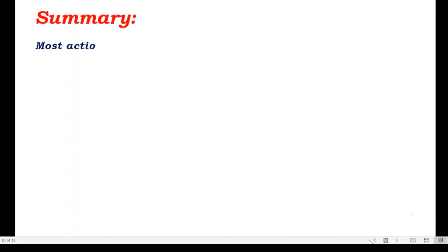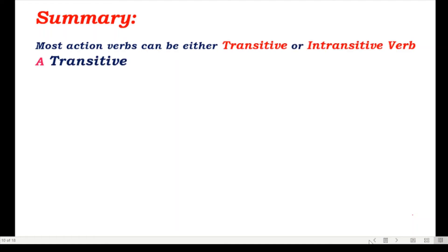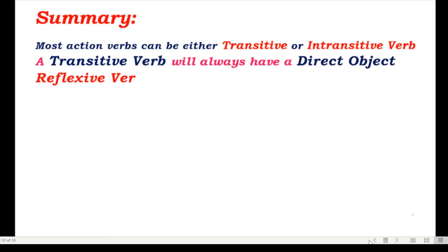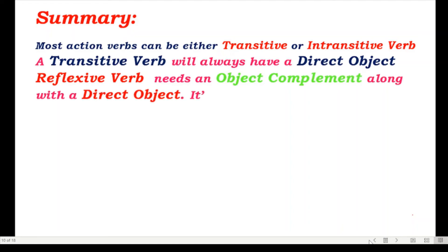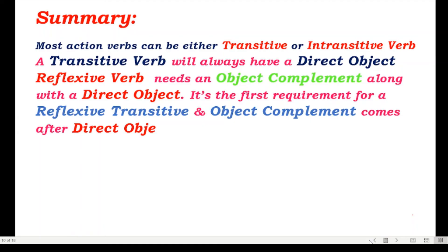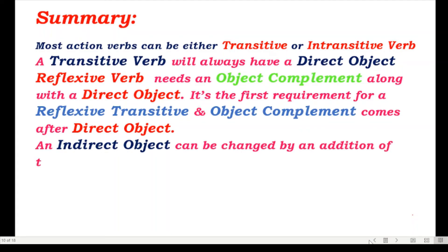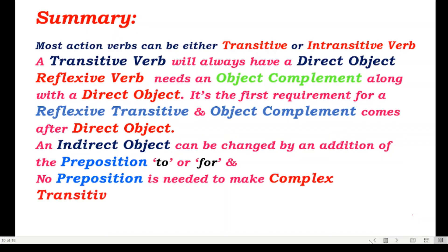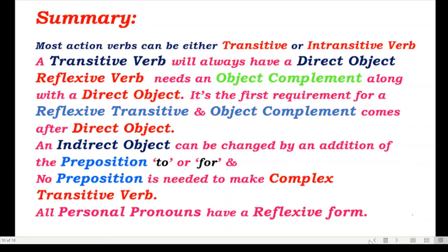Now let's have a short summary. Most action verbs can be either transitive or intransitive. A transitive verb will always have a direct object. A reflexive verb needs an object complement along with a direct object, and the object complement comes after the direct object. An indirect object can be changed by addition of the preposition 'to' or 'for.' No preposition is needed to make a complex transitive verb. All person pronouns have a reflexive form.